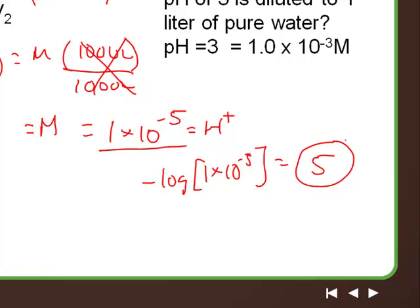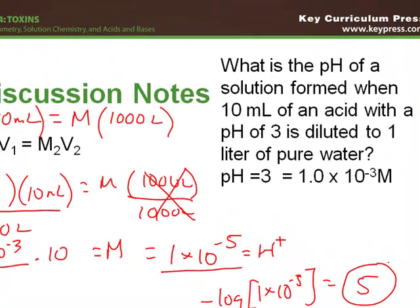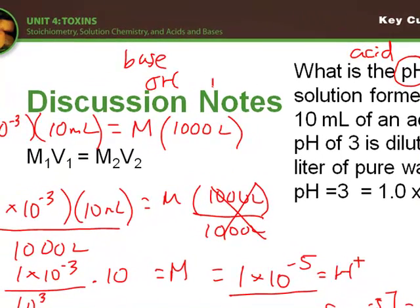The one thing about this trick, if you have a problem like this, is you do have to make sure you're aware that it is a pH and that it's an acid you're talking about. If it's a base, everything you're doing is in terms of pOH. So all your calculations are from the pOH perspective. Or you can just convert it to hydrogen ions.